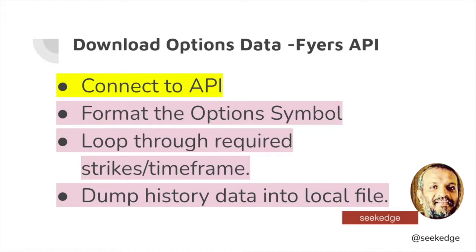The last video on this same topic was a demo on how to connect to the API. The connection requires you to generate the access token using the provided methods, and then you get connected and call the API functions to use functionalities like placing orders or checking fund balance. We covered that last week so we won't repeat it. Today the aim is to download the options intraday data. Options data, as you know, expires after the end of the contract — for example, the 16th December weekly expiry for Nifty or Bank Nifty is no longer available in the broker. So we need a mechanism to download it on a weekly basis to hold it ourselves.